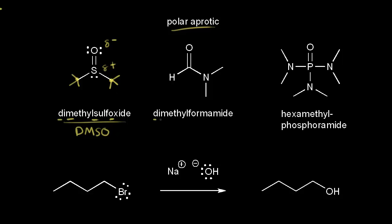Next let's look at DMF — that's the short way of writing this one. Again, there is no hydrogen directly connected to an electronegative atom. The hydrogens are directly connected to carbon, with three hydrogens on each carbon. So DMF is a polar aprotic solvent. And finally, HMPA — again, no hydrogens directly connected to an electronegative atom.